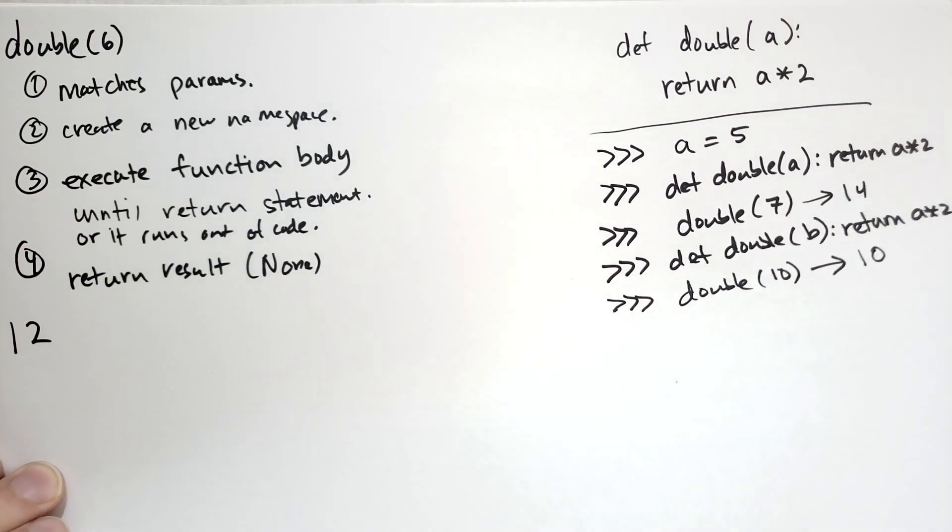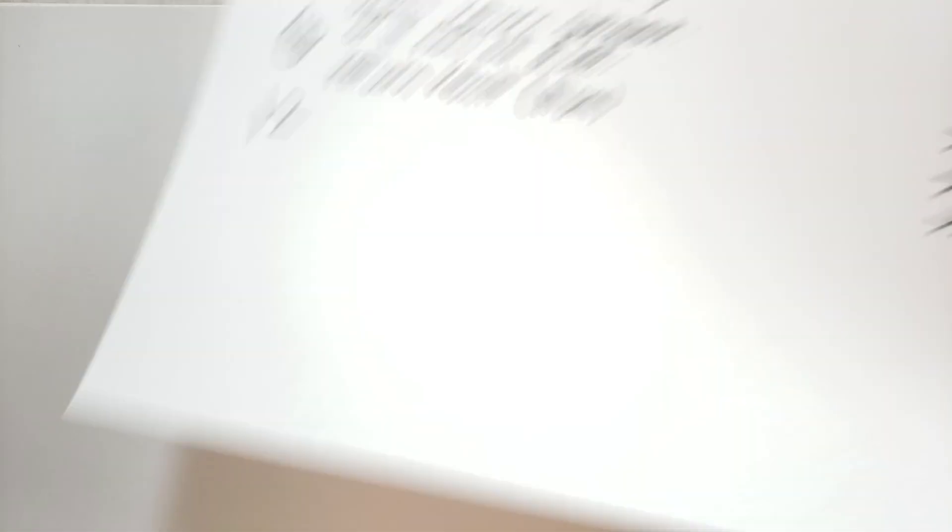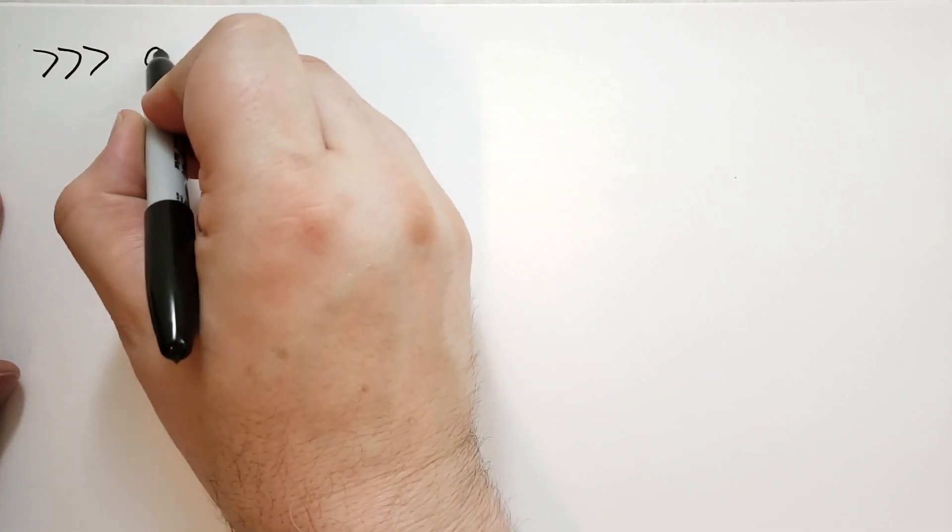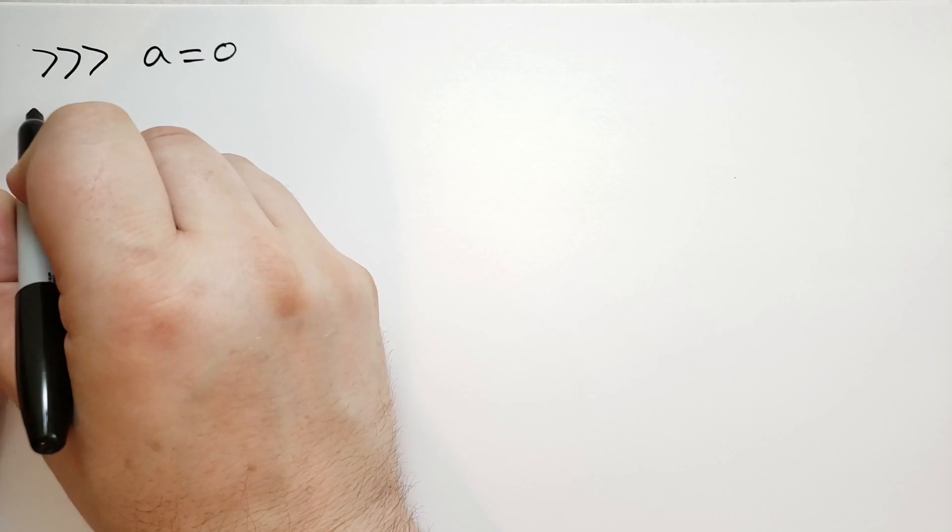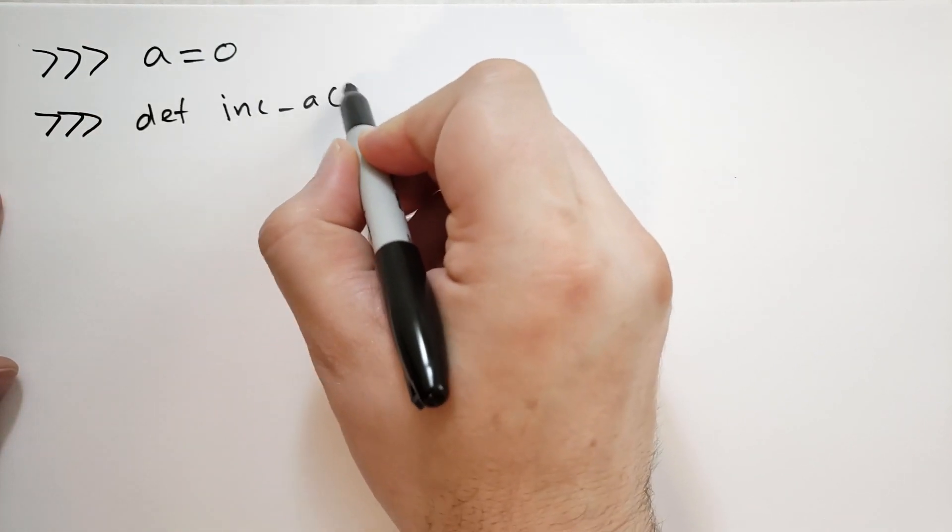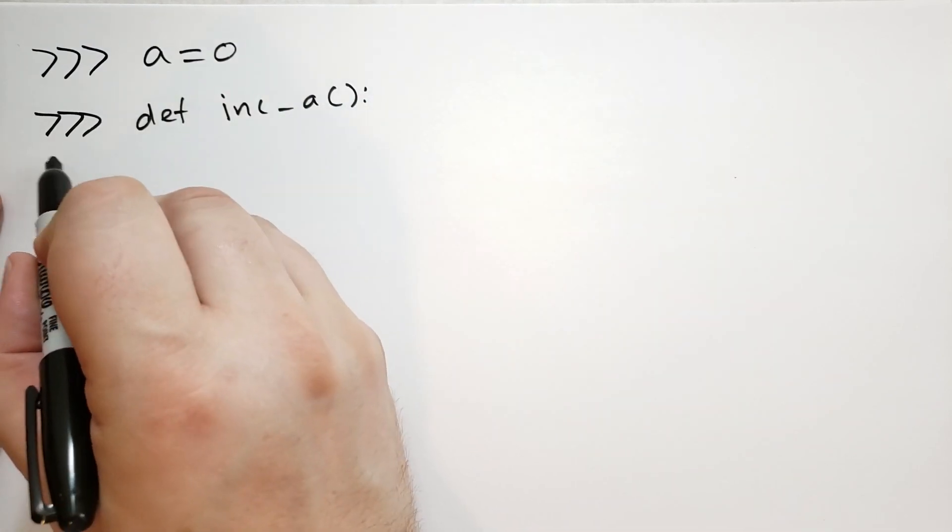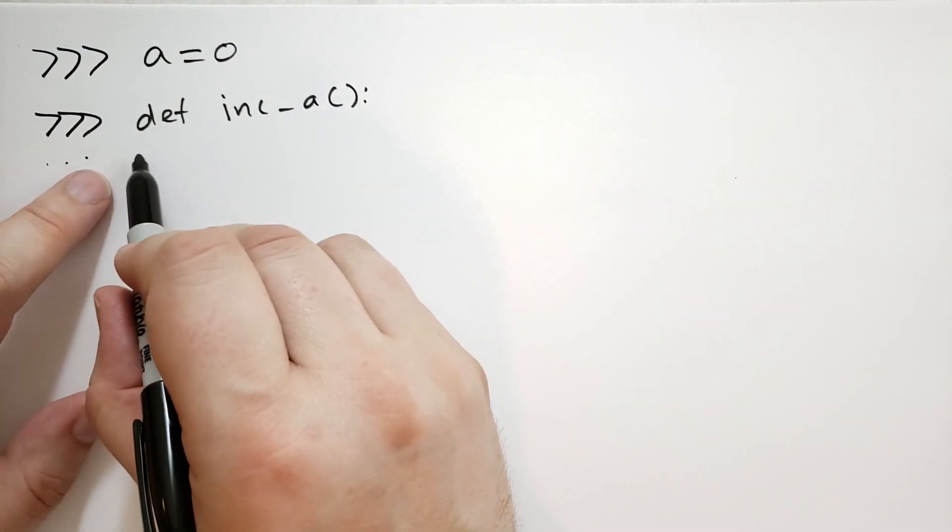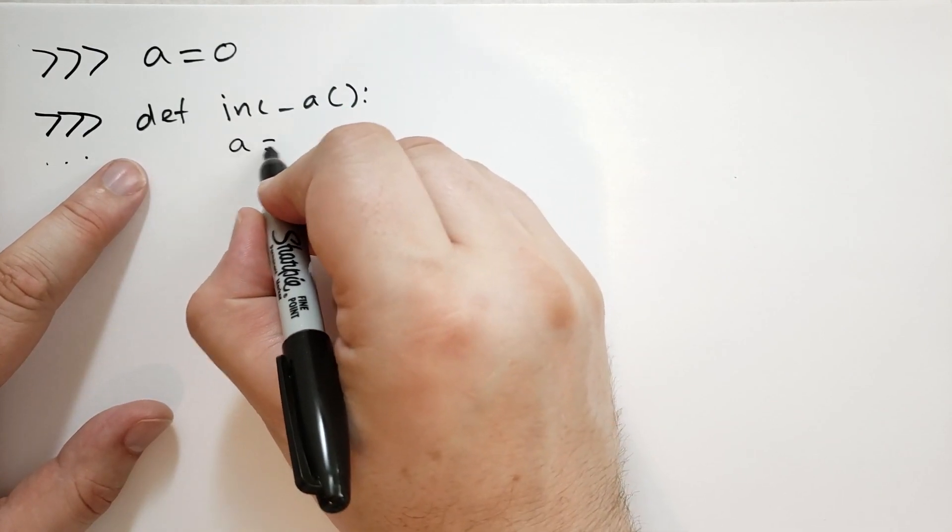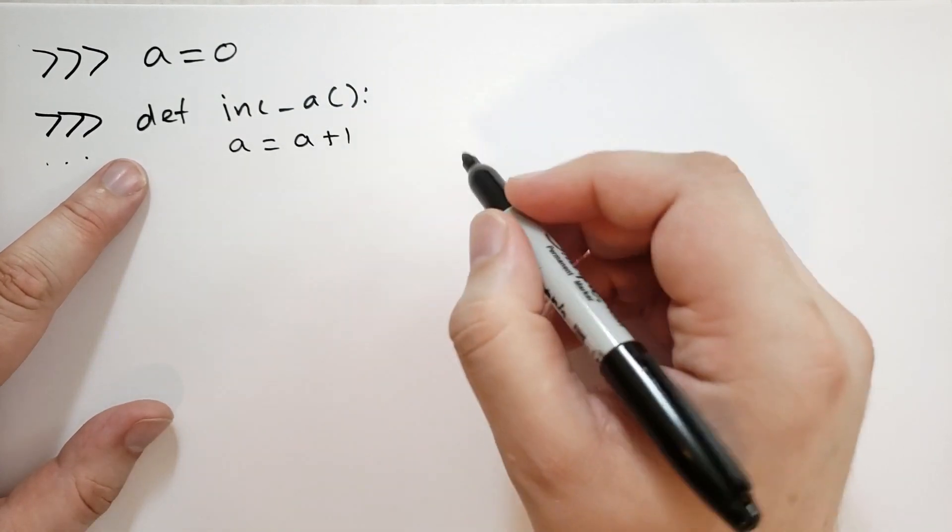Now there's an error that you're going to run into when you define a function. Let me give you an example of what will happen to spawn this error. Let's say you have A is equal to 0, and I'm going to define a function that increments A. And the body of that function, we're going to do dot, dot, dot is what it's going to say. We're going to indent it four spaces, and we're going to say A is equal to A plus 1.